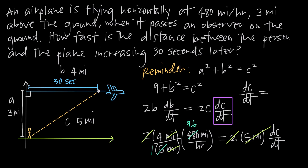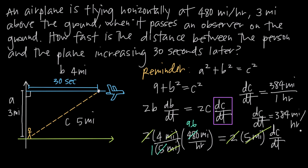In the numerator we have 4 times 96, which gives us 384, and we still have the miles units, so 384 miles. In the denominator we have 1 hour. So dC/dt equals 384 miles per hour. That's how fast the distance between the person and the plane is increasing 30 seconds after the plane passes the person on the ground.